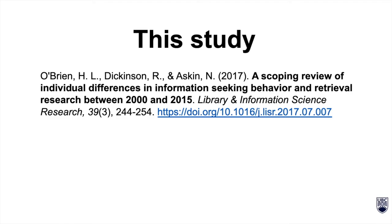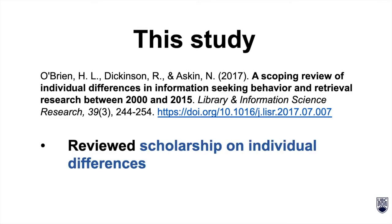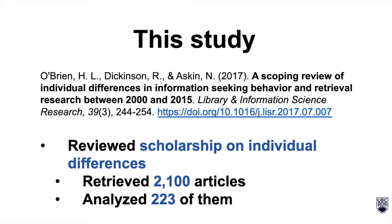In this study, O'Brien, Dickinson, and Askin reviewed scholarship on individual differences. They retrieved over 2,100 articles and applied scoping methodology to narrow them down. Ultimately, they analyzed 223 articles in more depth.